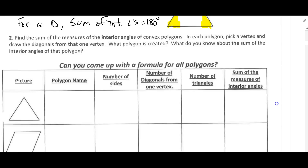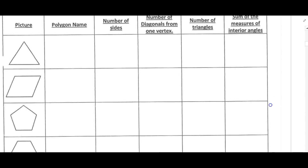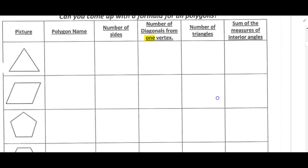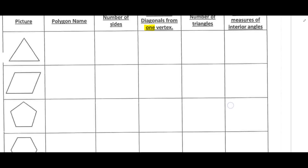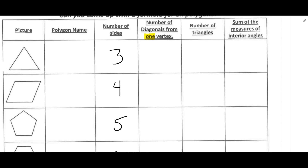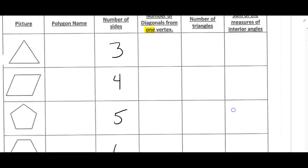Let's take a look at this chart. We've got different polygons on the left, with columns for the polygon name, number of sides, number of diagonals from one vertex, number of triangles formed, and the sum of the interior angles. Go ahead and pause the video, write in the polygon names and number of sides for five different polygons, then restart when you're done. You should have three, four, five, six, and eight.